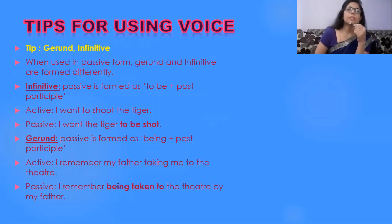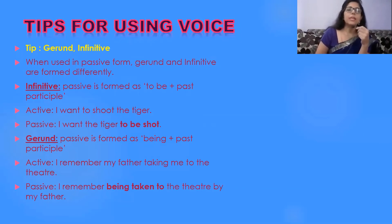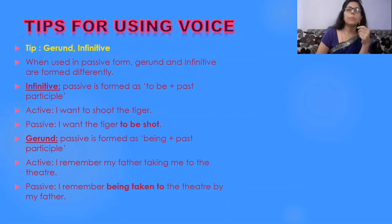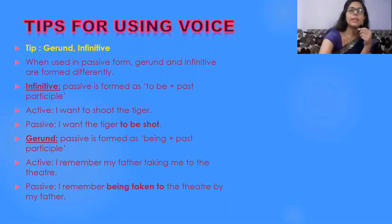Another tip: gerunds and infinitives. When used in passive form, gerunds and infinitives are formed differently. For infinitives, passive is formed as 'to be + past participle.' For example, 'I want to shoot the tiger' becomes 'I want the tiger to be shot.' For gerunds, passive is formed as 'being + past participle.' For example, 'I remember my father taking me to the theater' becomes 'I remember being taken to the theater by my father.'